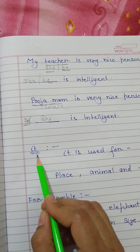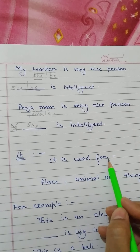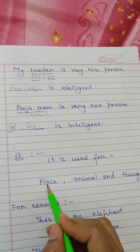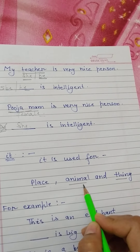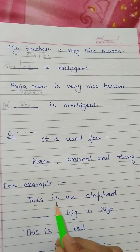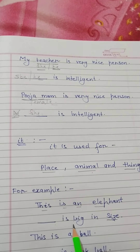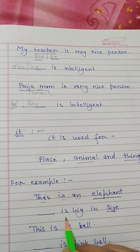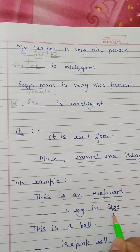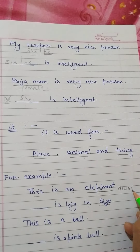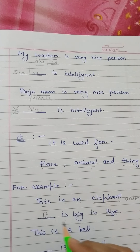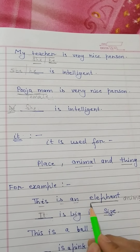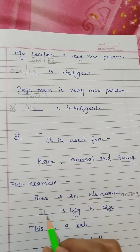Now see the use of it. It is used for any place, animal, or thing. For example: this is an elephant, and blank is big in size. Here we are talking about an elephant — whose size is big? The elephant's size is big. And an elephant is an animal. That's why we always use it here — because we are talking about an animal, we always use it.